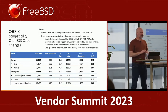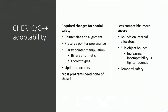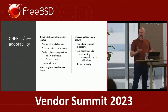We ported six million lines of KDE to CHERI — again 0.02%, and much of that change was fixing cross-compilation rather than actually changing the source code. To reiterate: we require some small changes for spatial safety — pointer size and alignment changes, preserving provenance, clarifying pointer manipulation such as stashing bits in low bits of well-aligned pointers, using correct types, and tweaking allocators. But most programs don't need any of these changes.